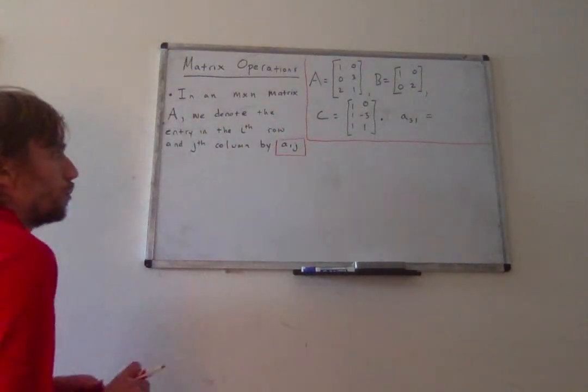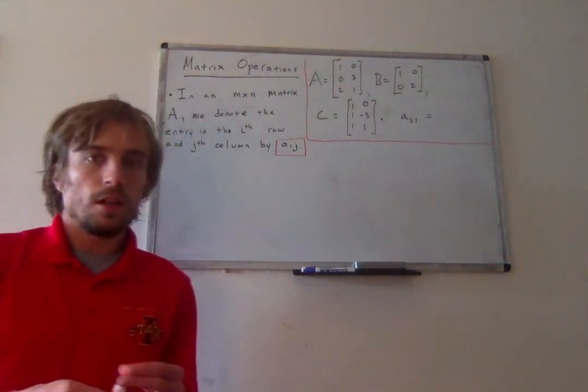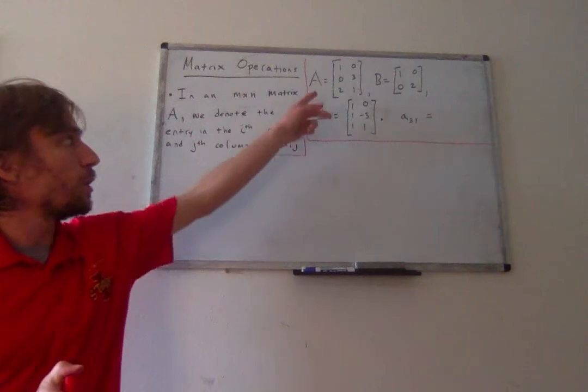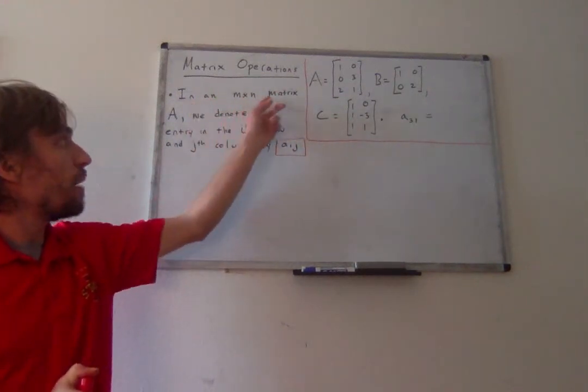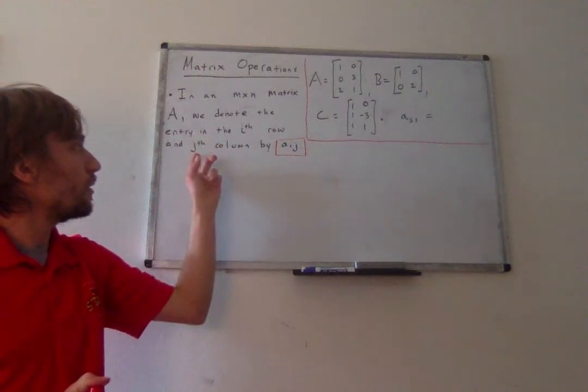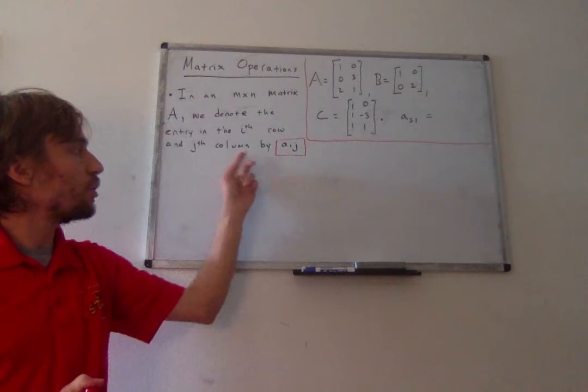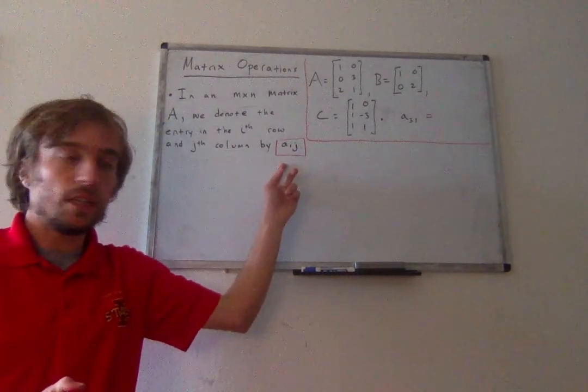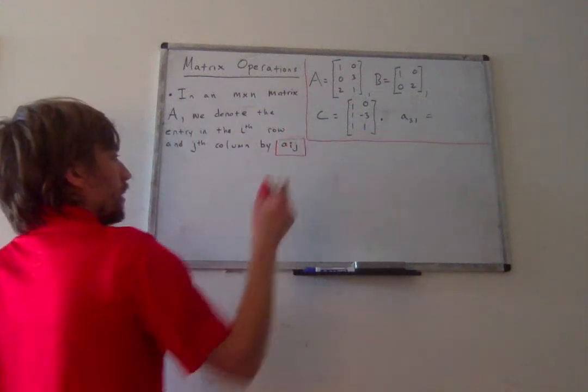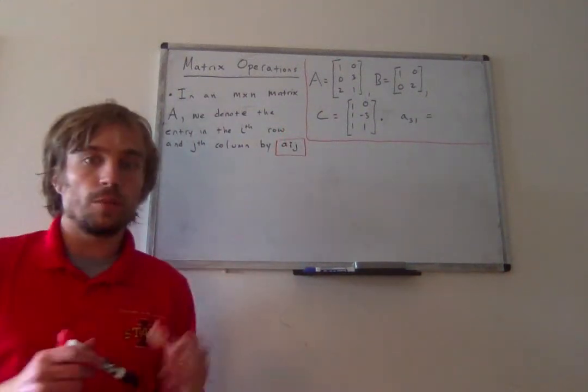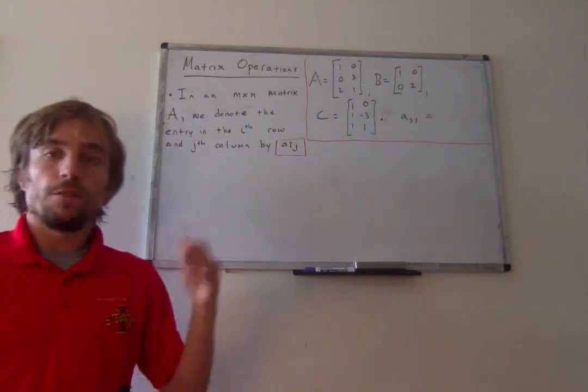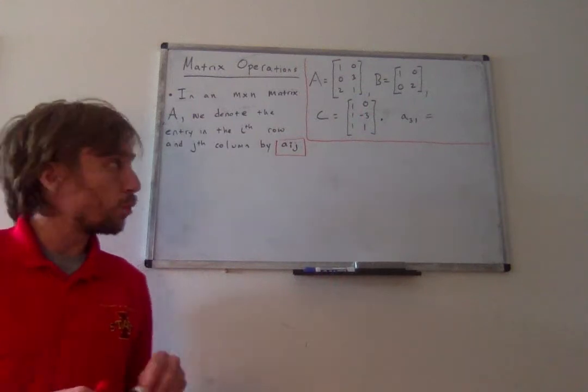So I have one already written on the board. When we're discussing a matrix, I've got three matrices here. We'll use A as an example. So if A is an n by n matrix, we will denote the entry in the i-th row and j-th column by a sub ij. So usually the way this works is you've got like some lowercase variable often corresponding to the uppercase variable with which we've assigned our matrix. First number will be row, second number will be column.